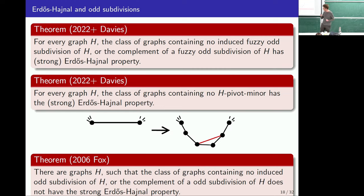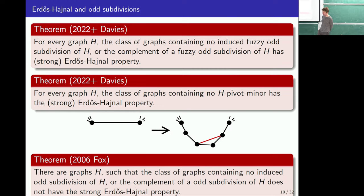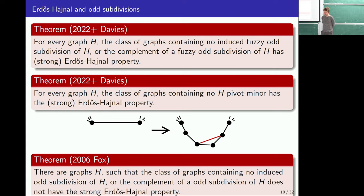Moving on to chi-boundedness. Colouring is just an assignment of colours so that adjacent vertices receive different colours, and the chromatic number is the number of colours you need. The clique number gives a lower bound for the chromatic number — in a clique, every vertex needs its own colour. For instance, if we have a triangle in the graph, we know we need at least three colours. A class of graphs is chi-bounded if there's a function giving you an upper bound on the chromatic number in terms of the clique number.